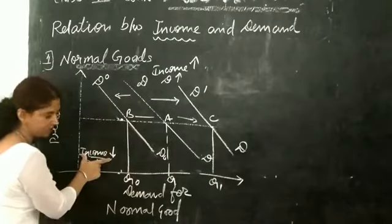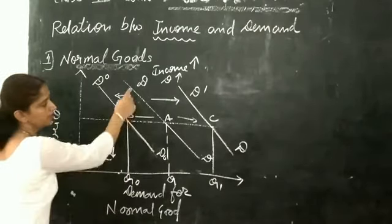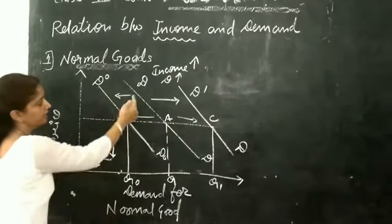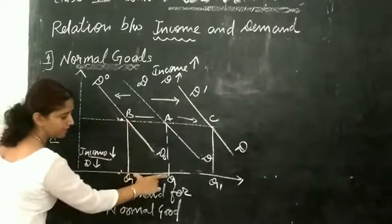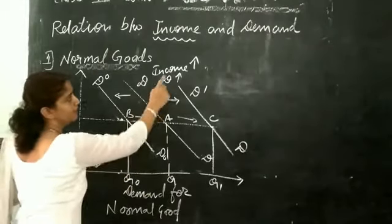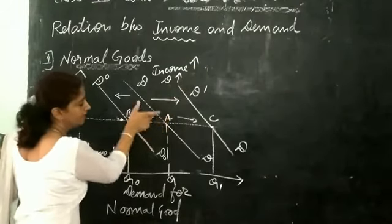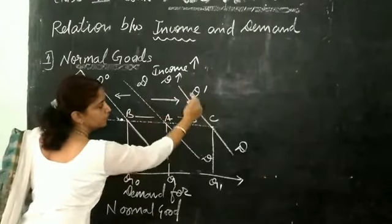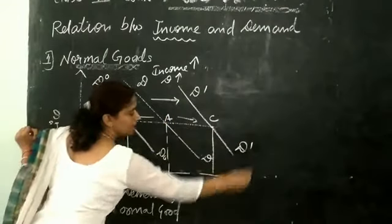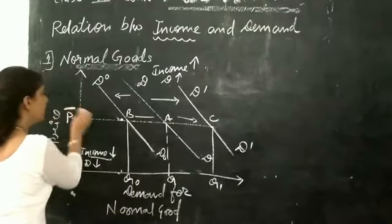To summarize: if income decreases, the demand for normal goods also decreases and the demand curve shifts towards the origin, giving a lesser demand than before. On the other hand, if income increases, demand also increases and the demand curve shifts outward to D-D dash.